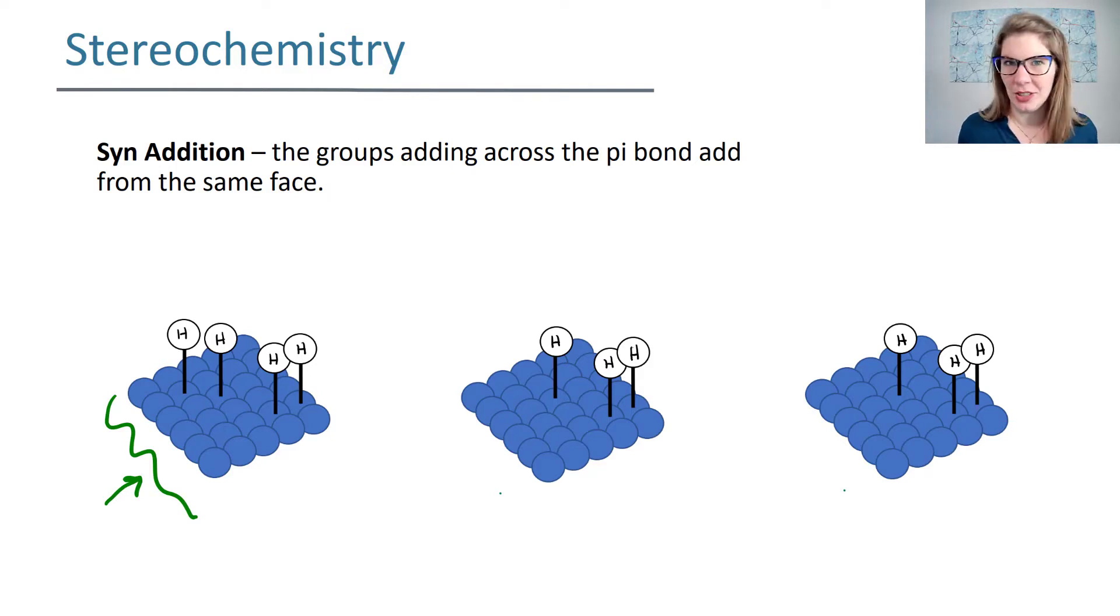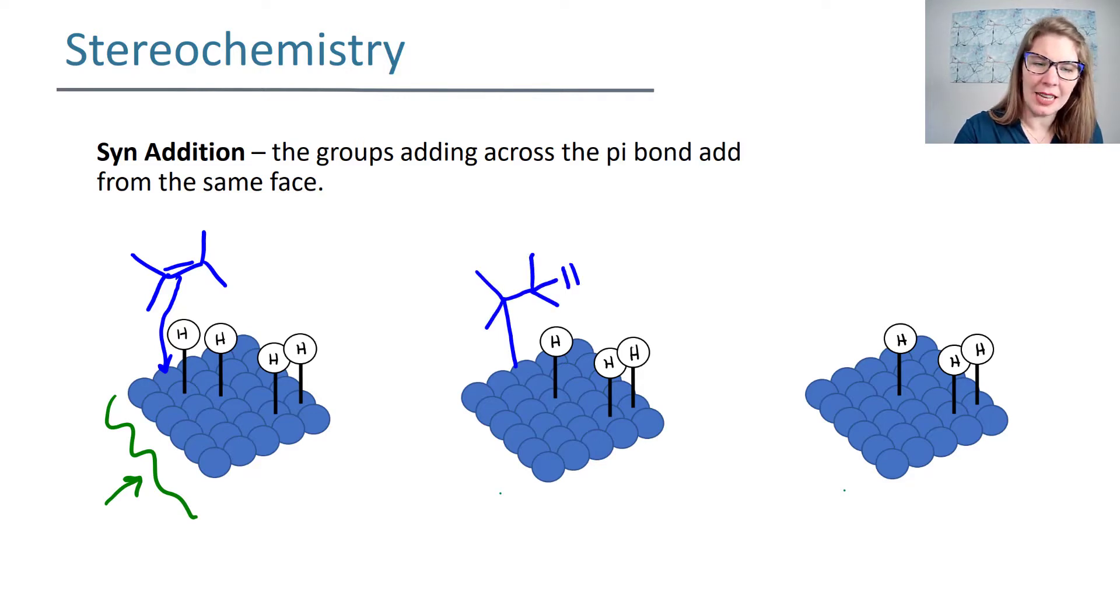Your hydrogen essentially adheres to this catalyst, and now your alkene can come in from one side and attach itself to the metal catalyst and pick up one of those hydrogens. So when it does that, now we have the metal that's attached to your alkene that just picked up one of the hydrogens. And next, it's going to pick up another hydrogen. So maybe it picks up this hydrogen, and when it picks up that other hydrogen, it detaches itself from the metal catalyst and now you have your two hydrogens attached.